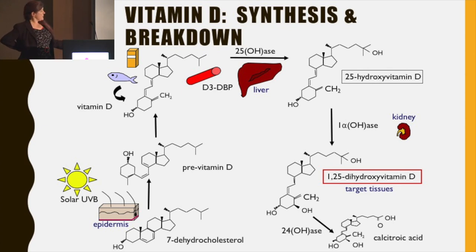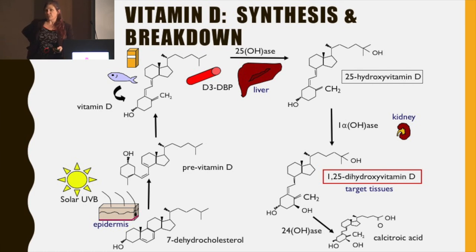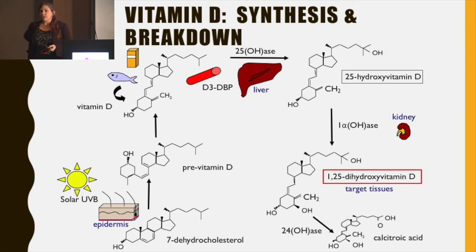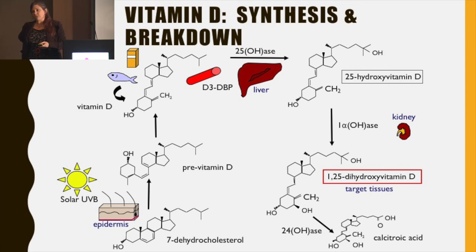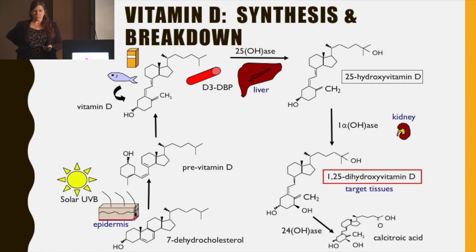So 7-dehydrocholesterol in the skin on UVB exposure is converted to vitamin D. And sadly, the same UV rays are the ones that cause sunburn and increase our risk of skin cancer. So if you use sunburn protection cream, there is no avoiding the fact that you will also impair your vitamin D synthesis.